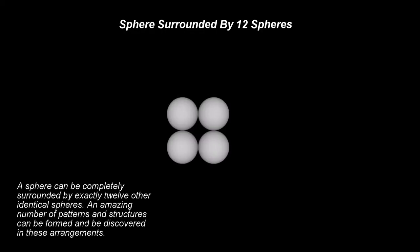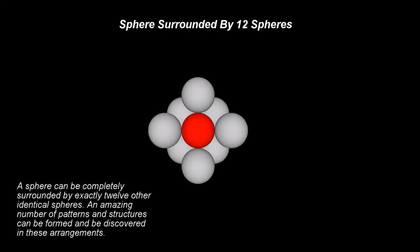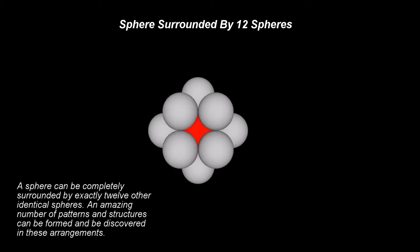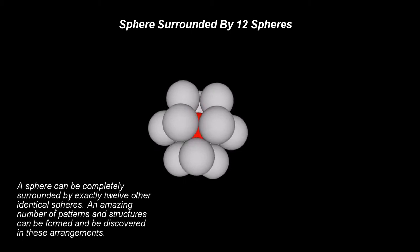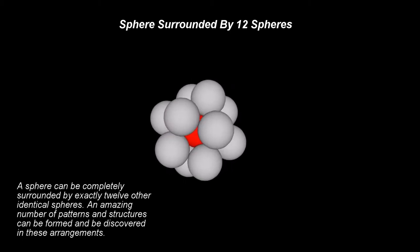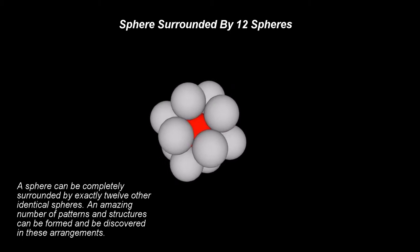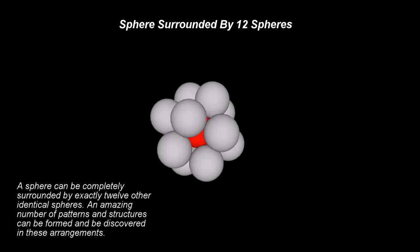Let's start by stating a well-known fact: a sphere can be completely surrounded by exactly 12 other identical spheres, in only one way.